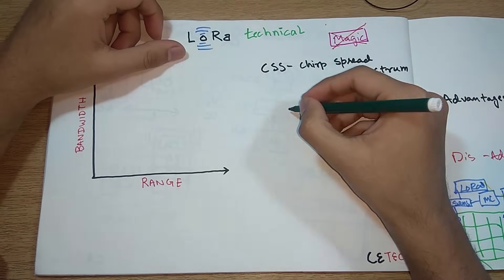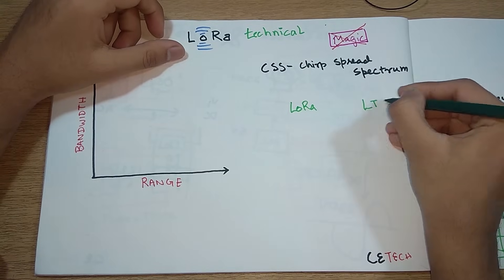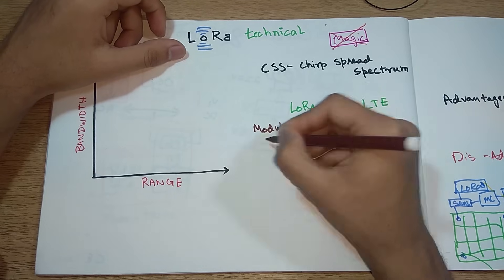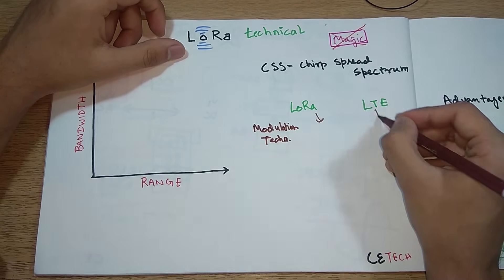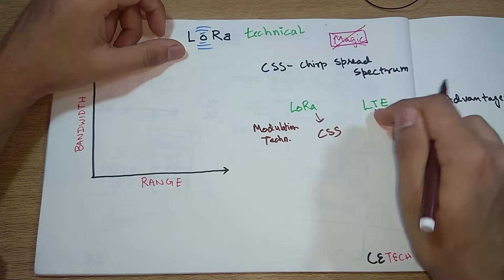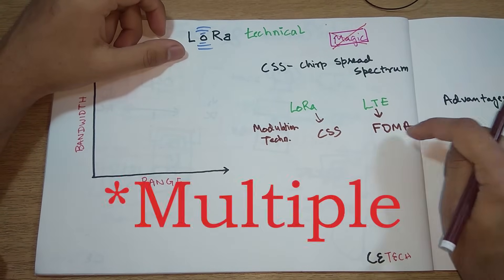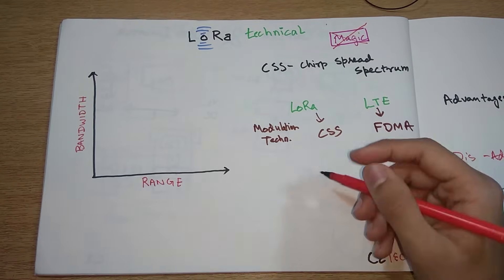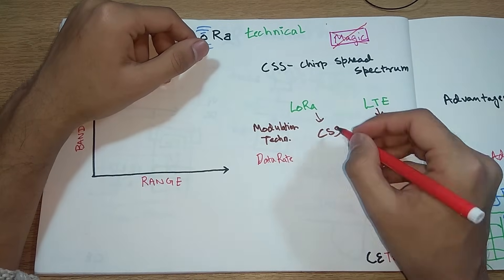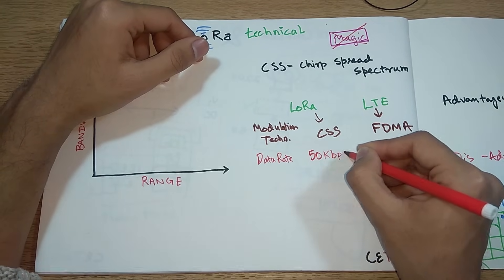For better understanding, let's directly compare LoRa with LTE. The first thing we'll see is modulation technique. LoRa uses CSS as I told you and also uses FDMA, Frequency Division Multiplexing Access.